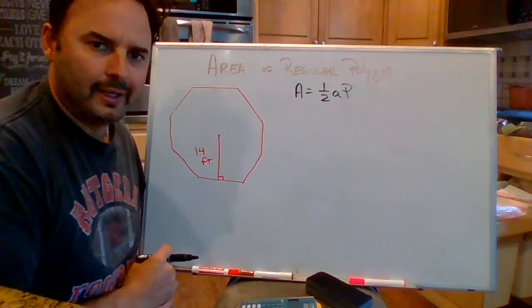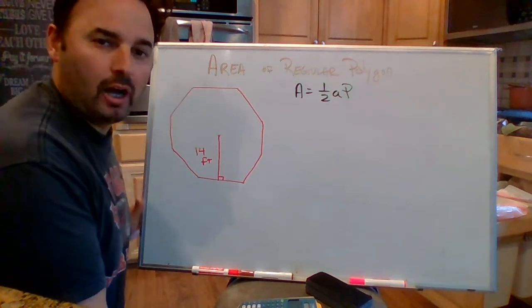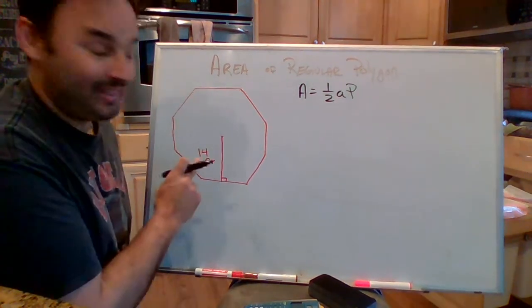All right guys, it's our third installment. Now we're going to find the area of a regular polygon when we're given the apothem.